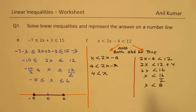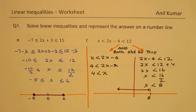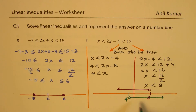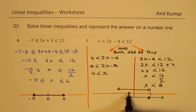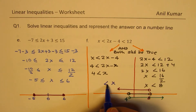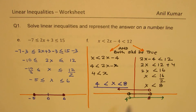Looking at both solutions together: one says x is less than 8, and the other says x is greater than 4. The combined AND solution is the overlap: 4 is not included, 8 is not included, but everything in between is. So the solution is 4 less than x less than 8. On a number line, this is represented with open circles at 4 and 8 and a segment connecting them.